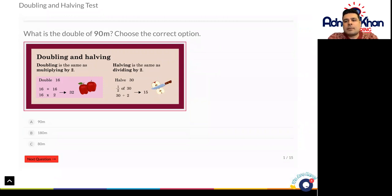Let's double 30. What we can do here is we can either do 30 add 30, and 0 add 0 is 0, 3 add 3 is 6, and that gives us 60 as an answer, or we can do 30 multiplied by 2.